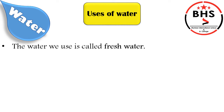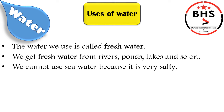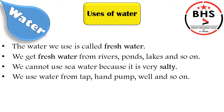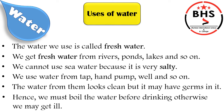The water we use is called fresh water. We get fresh water from rivers, ponds, lakes, and so on. We cannot use sea water because it is very salty. We use water from taps, hand pumps, wells, and so on. The water from them looks clean, but it may have germs in it. Hence, we must boil the water before drinking, otherwise we may get ill.